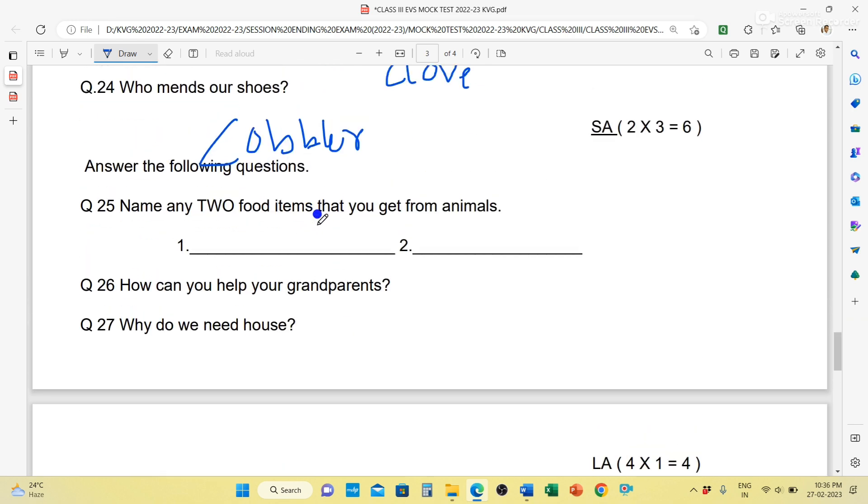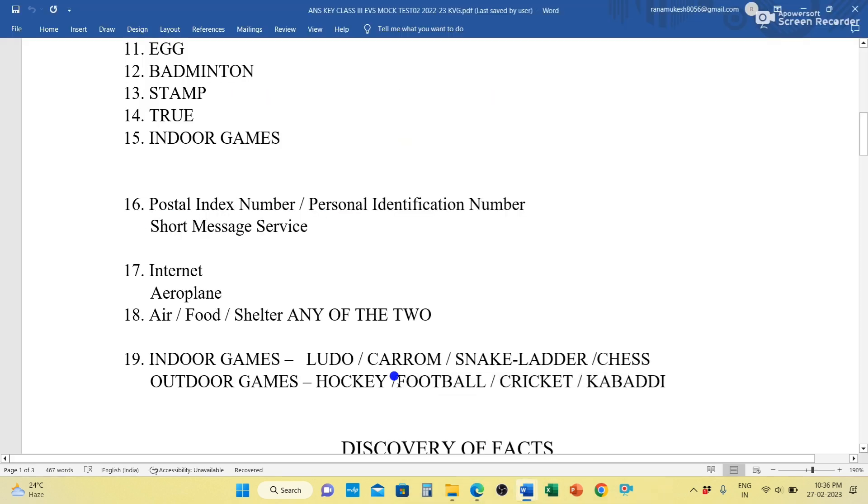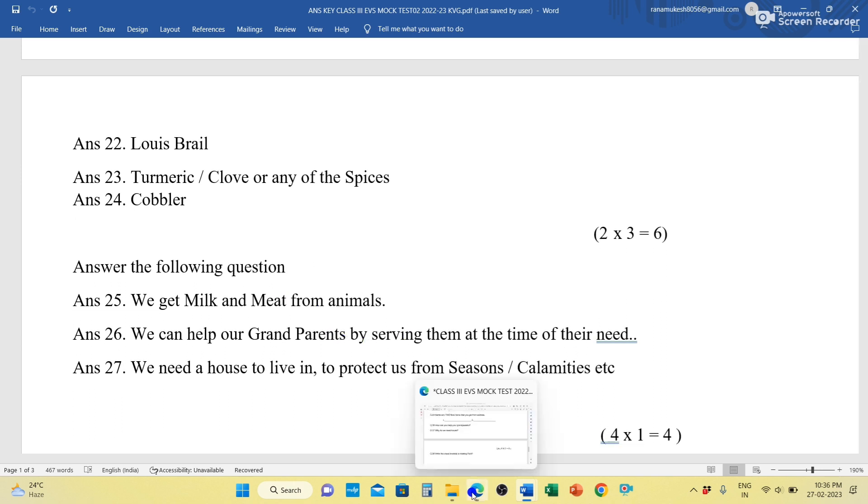Next, answer the following questions. Three questions carrying two marks. Each question carrying two marks. Name any two food items that you get from animals. From animals we get milk, meat.